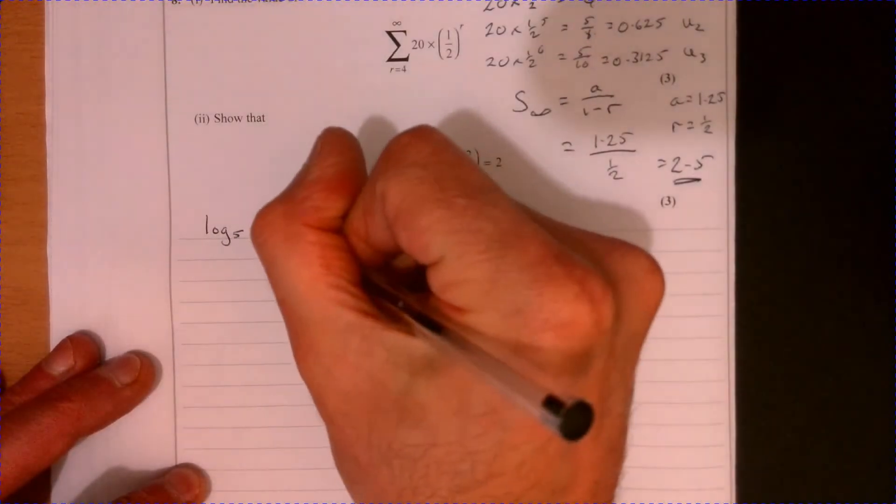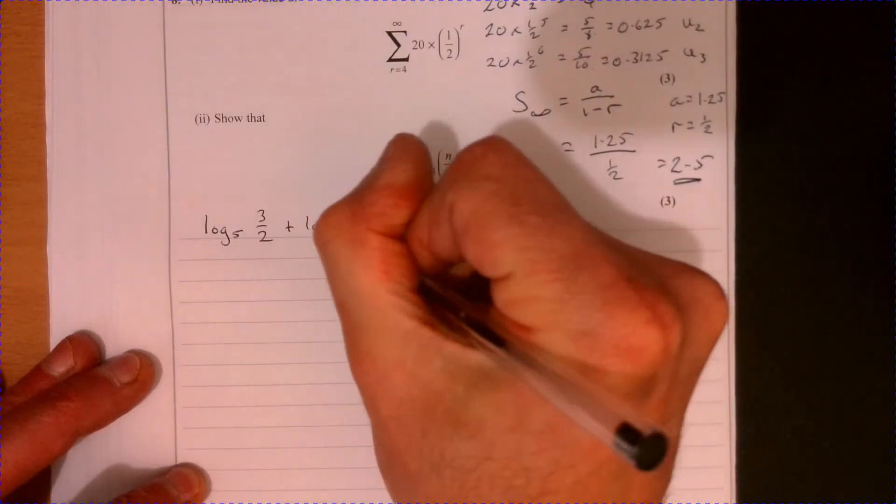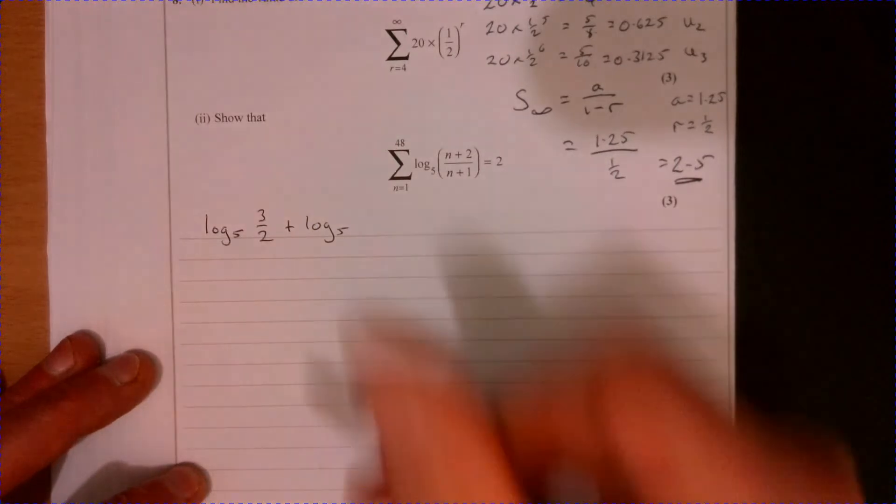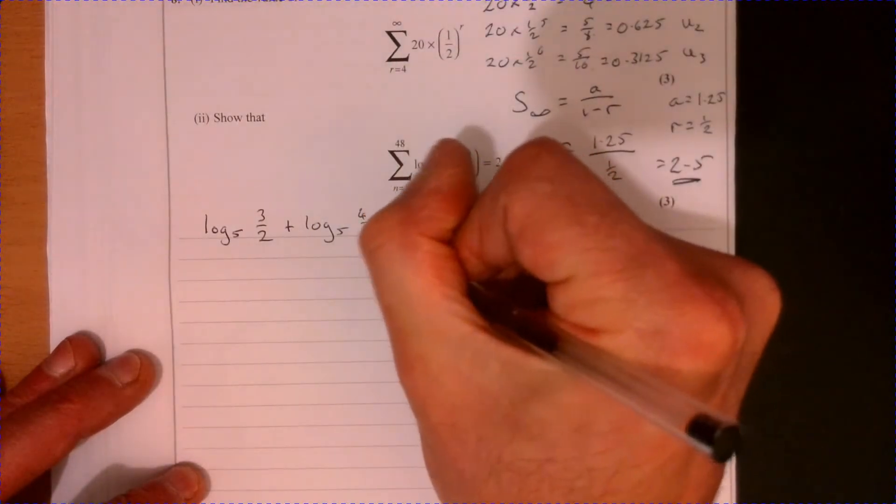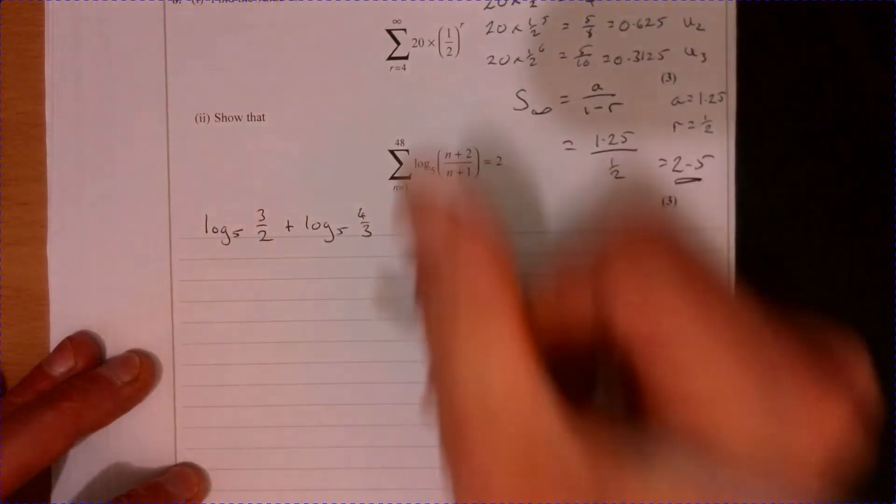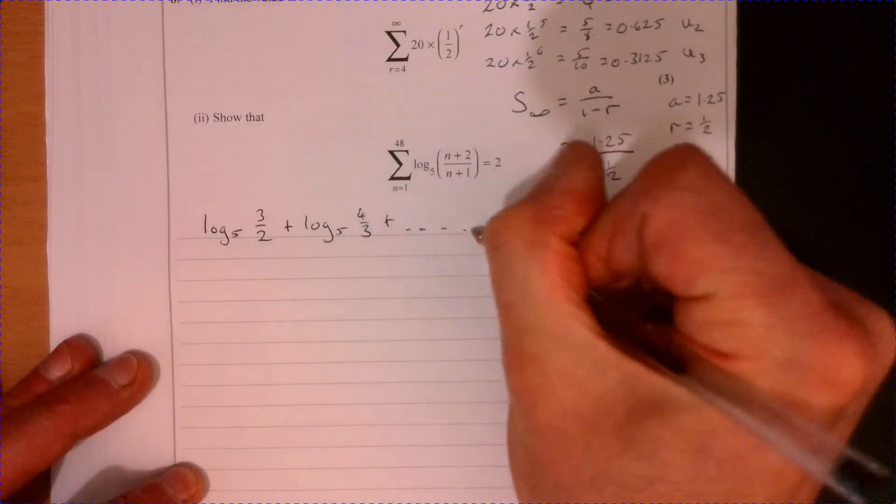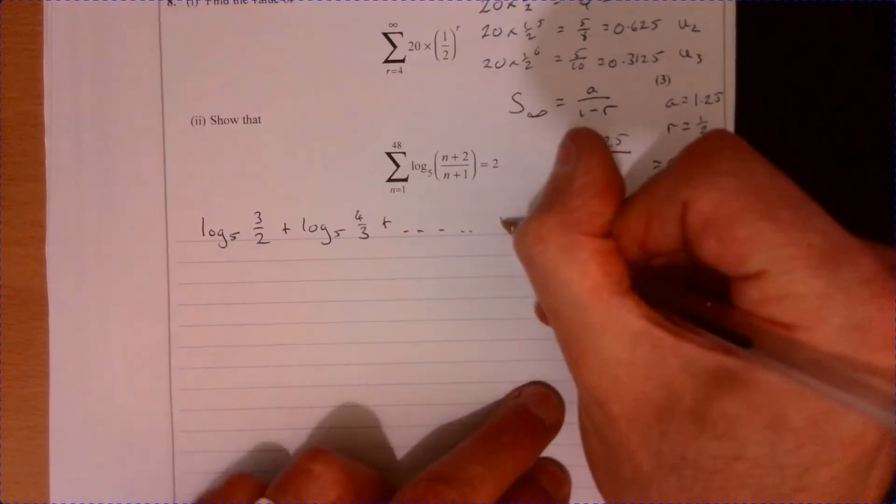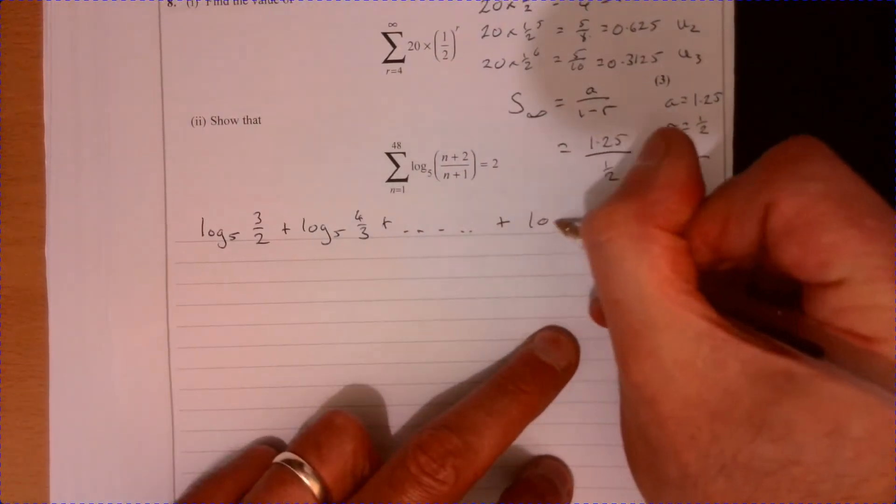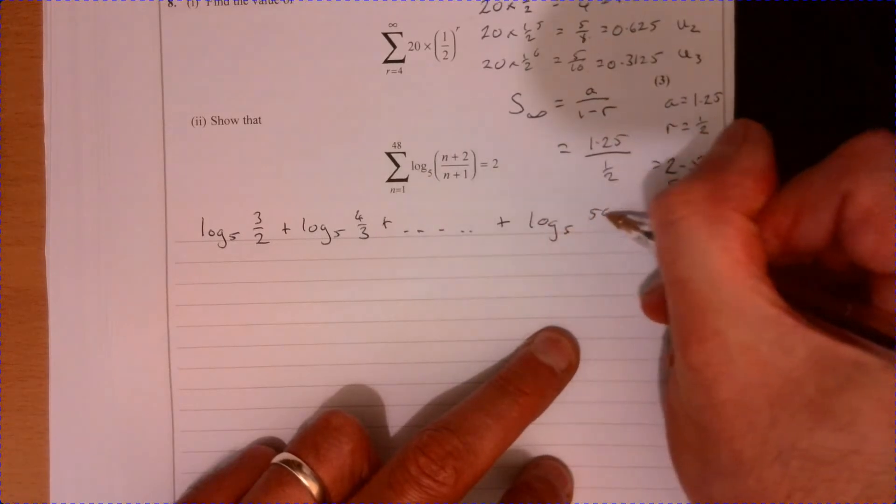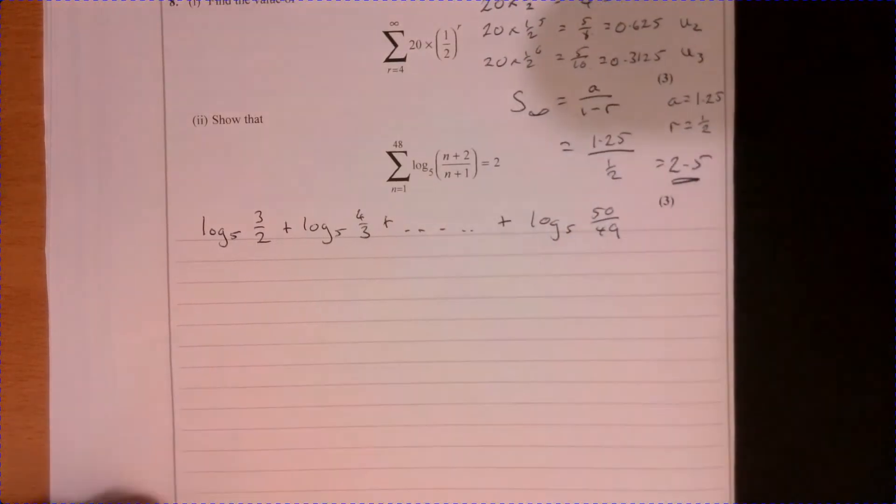Then the next term, don't worry about the base five for a minute we'll sort that out, is 4/3. Then it's going to keep going. What's the final term? The final term is going to be 50/49.